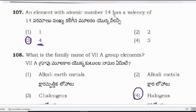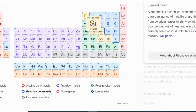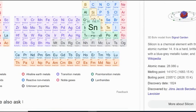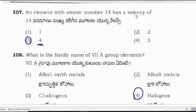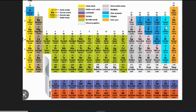Question: An element with atomic number 14 has a valency of? Atomic number 14 is silicon, and its valency is 4. The family name of 7A group elements is halogens.